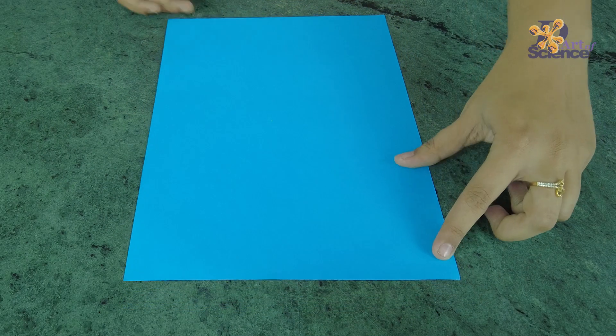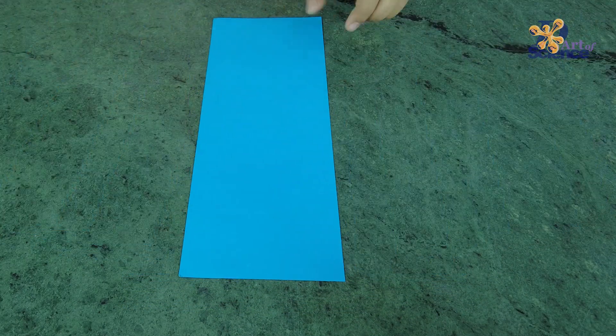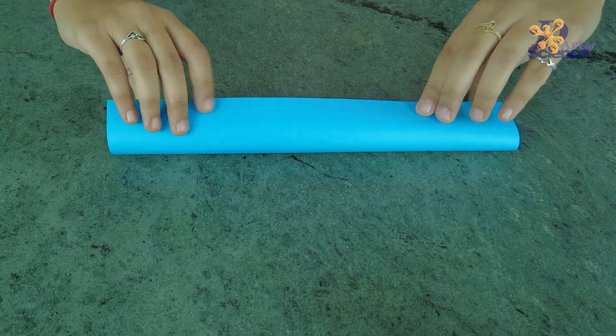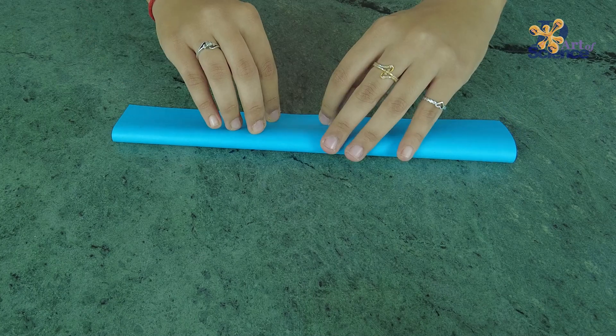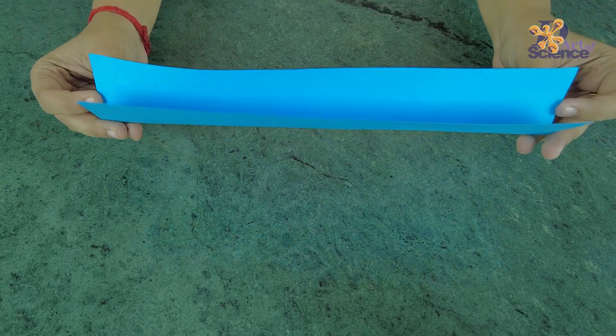For the first one, take an A4 size paper and cut it exactly in half. Next, fold this piece of paper in half lengthwise. Make sure that the fold is neat and the edges are aligned.